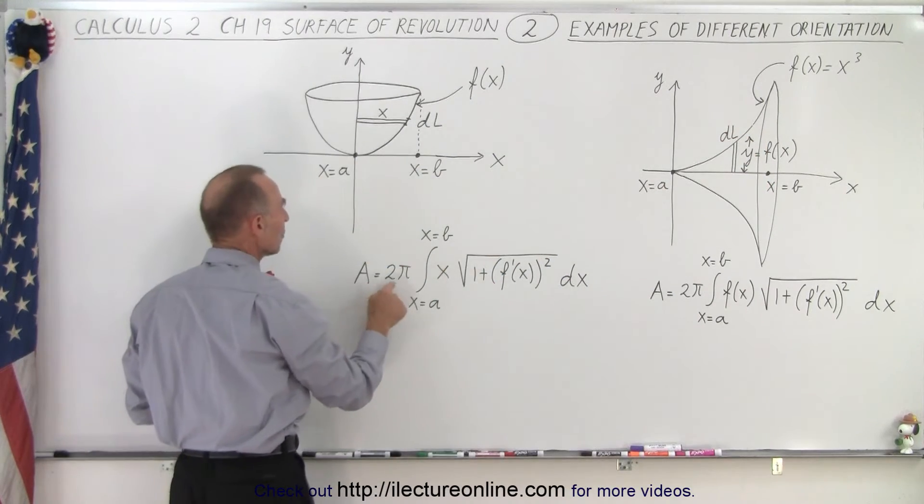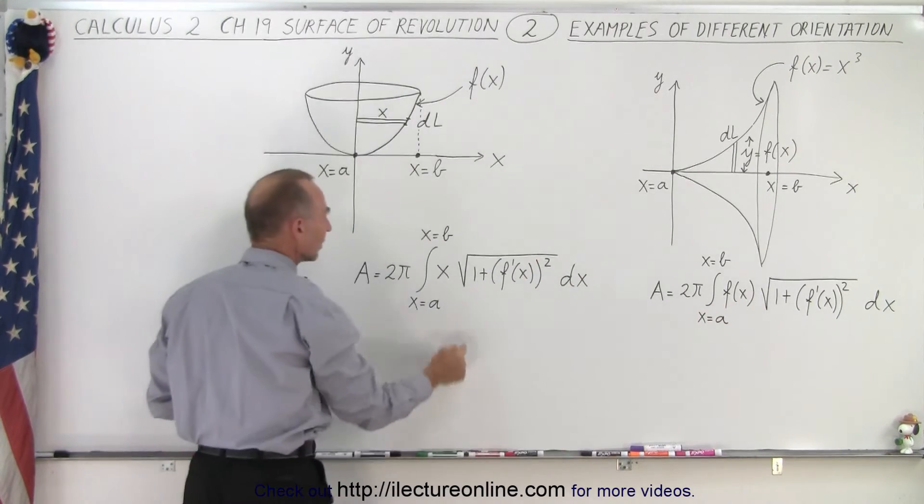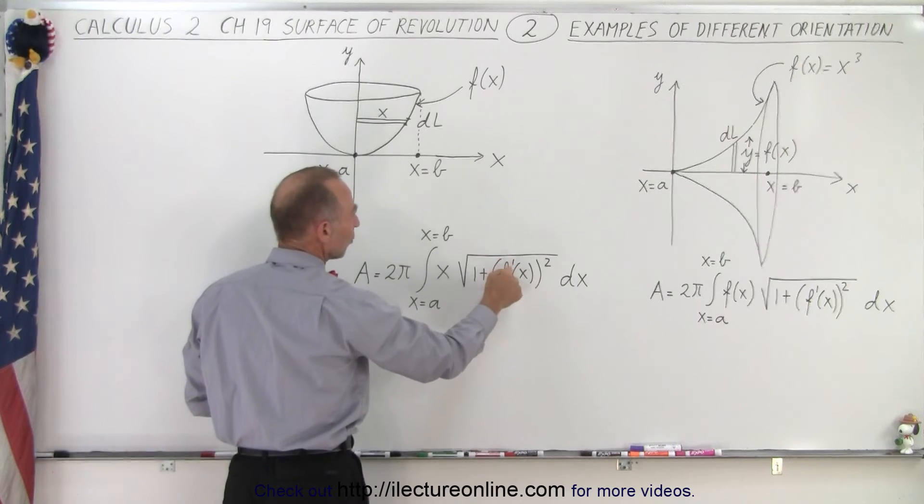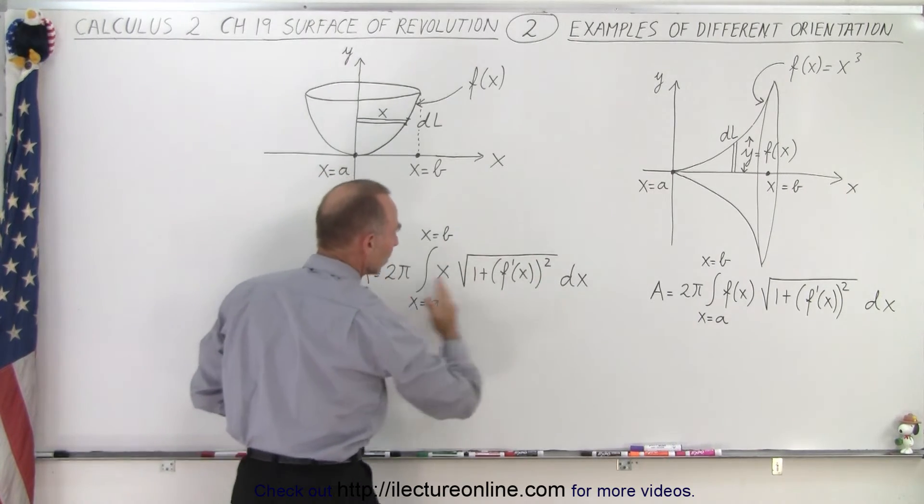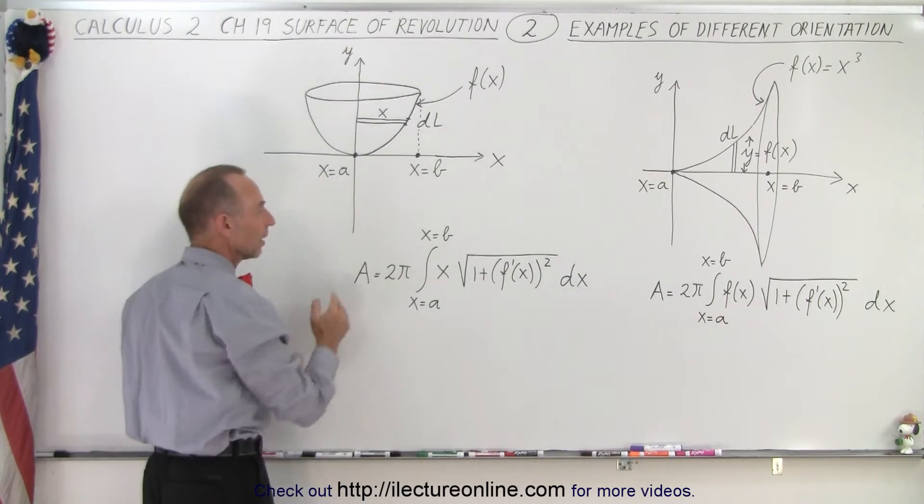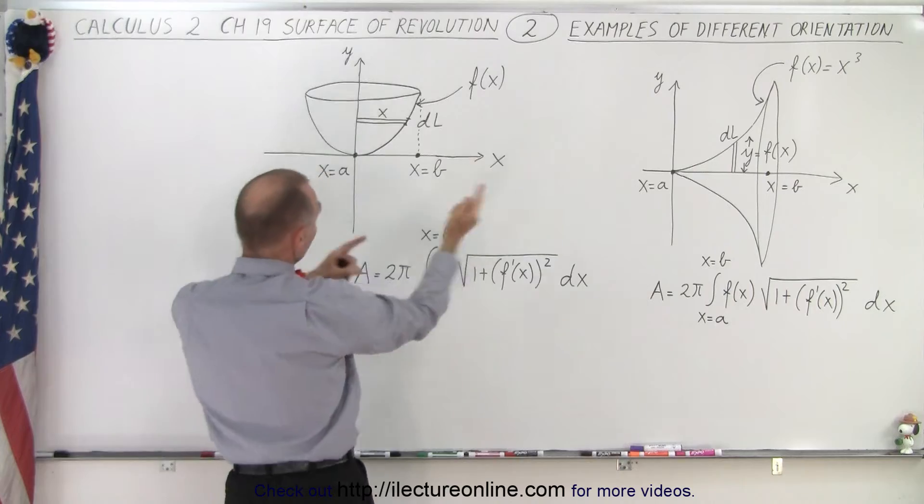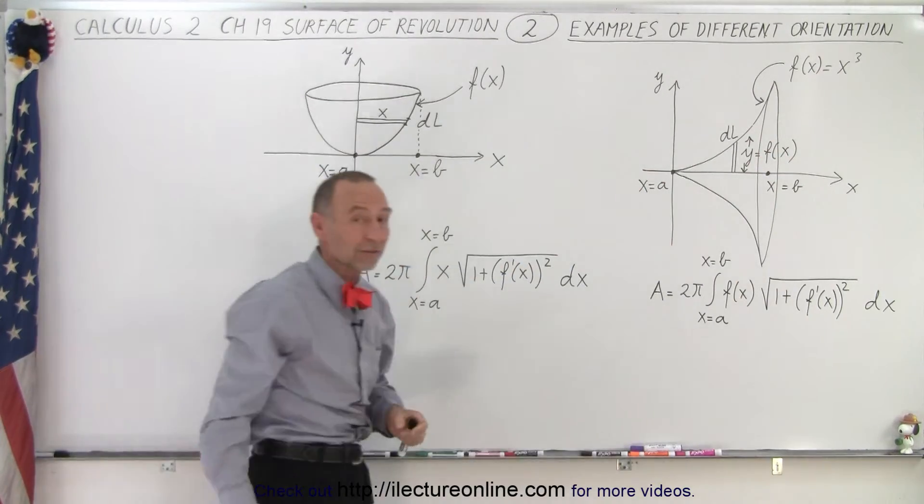And so when we then integrate, we have two pi times the radius, but instead of writing the function of x, we simply write x times the square root of one plus the derivative squared of the function, which of course gives us the arc length when we integrate from x equals a to x equals b. So it's essentially the arc length revolved around, in this case, around the y-axis, and here to revolve around the x-axis.